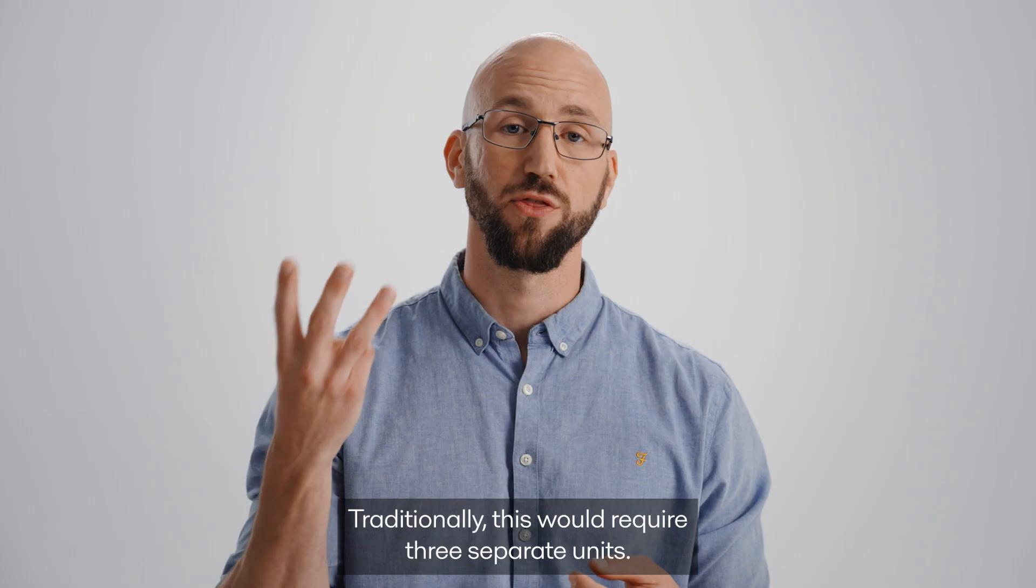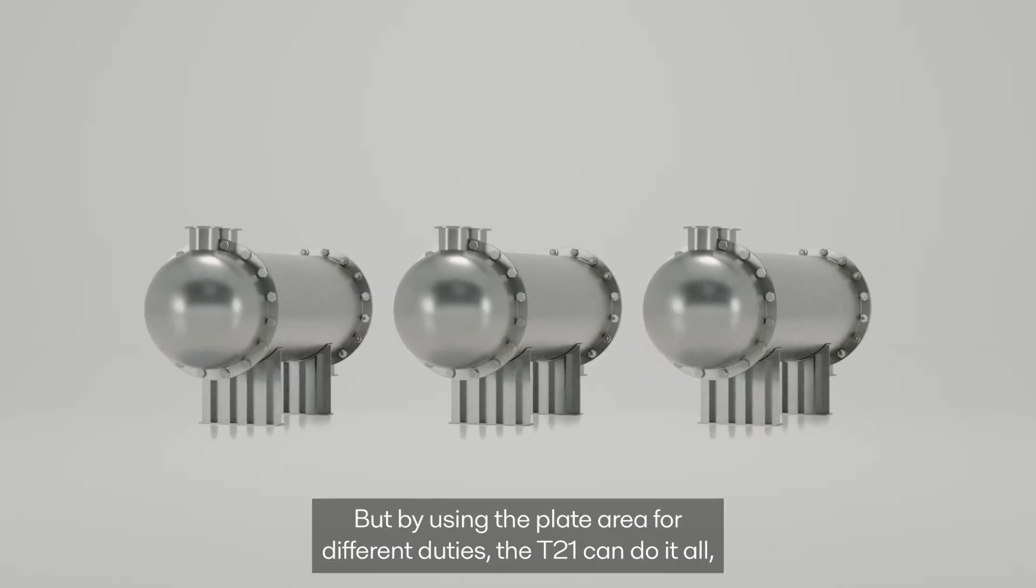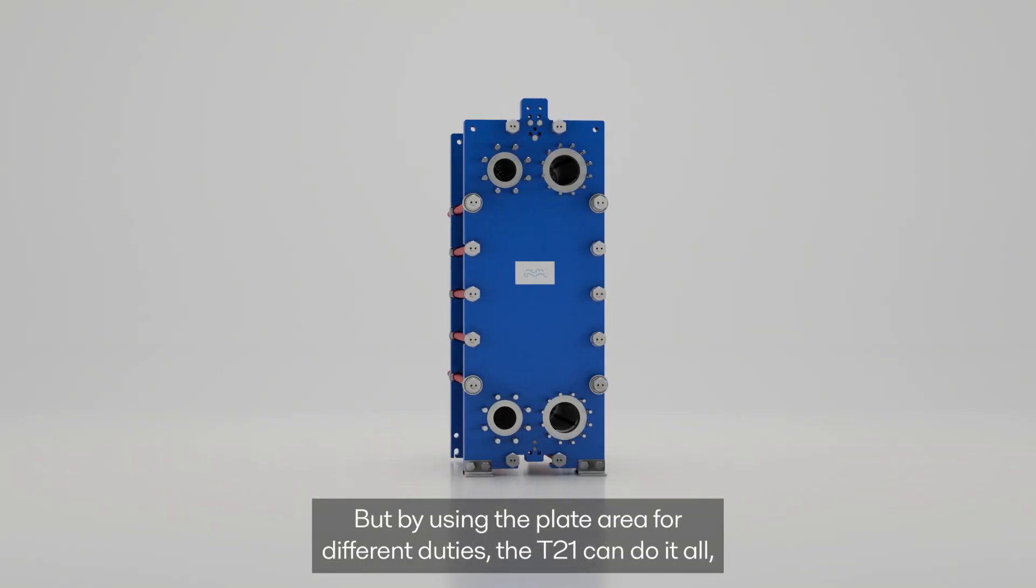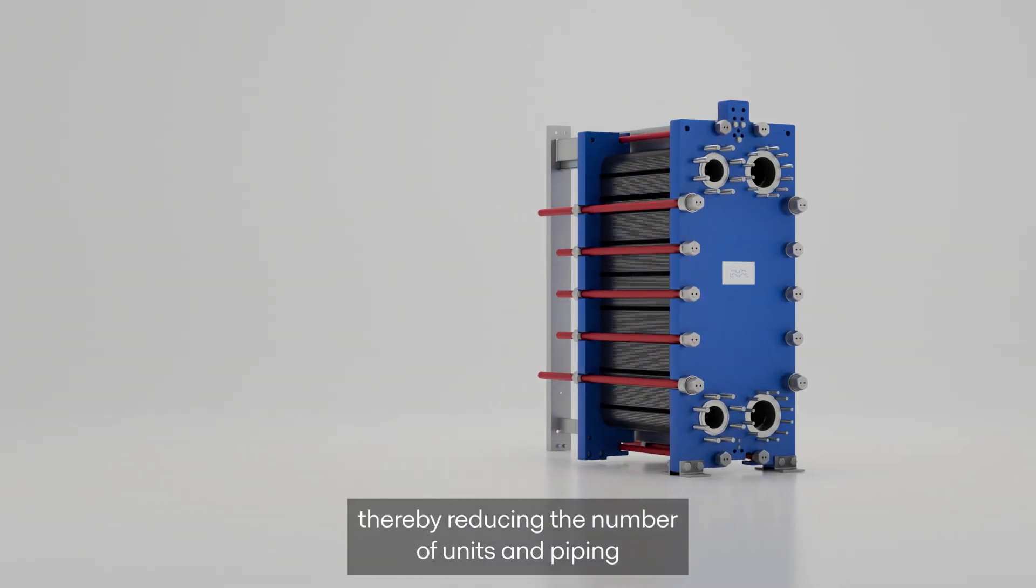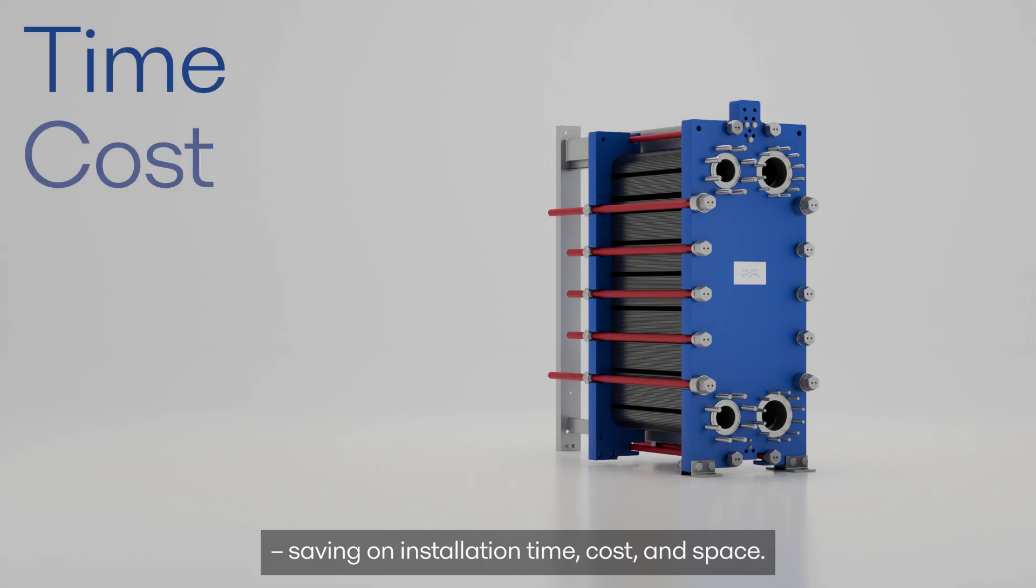Traditionally, this would require three separate units. But by using the plate area for different duties, the T21 can do it all, thereby reducing the number of units and piping, saving on installation time, cost, and space.